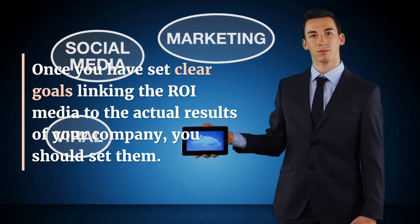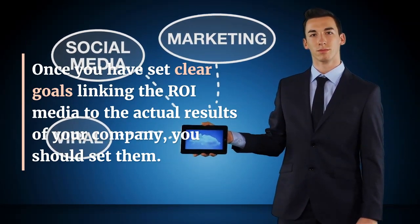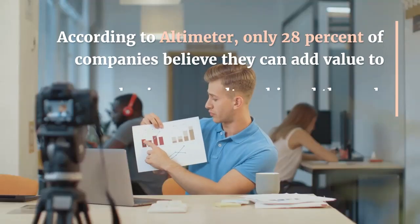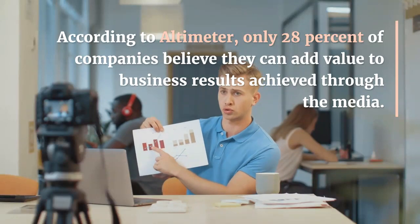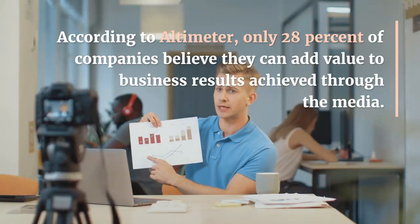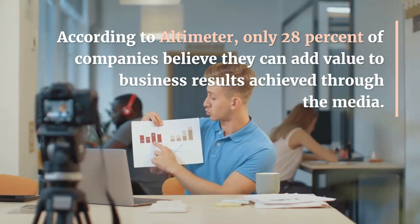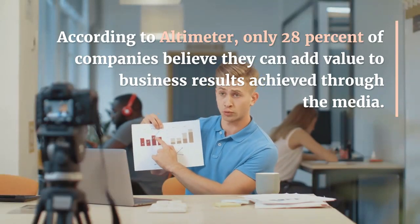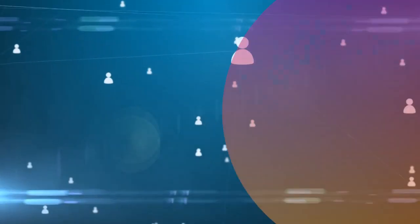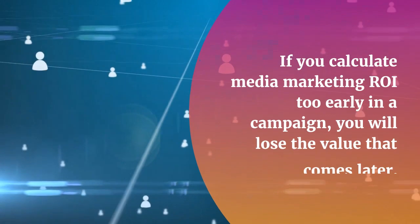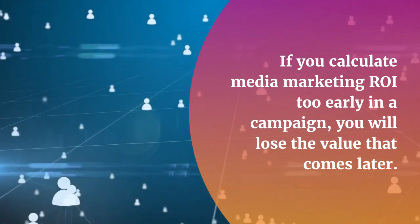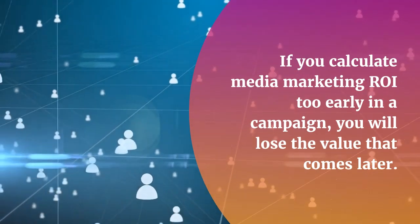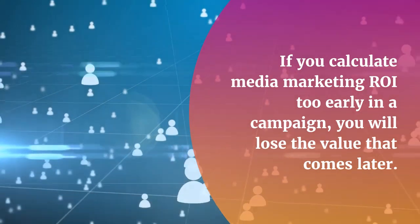Once you have set clear goals linking the ROI media to the actual results of your company, you should set them. Clear media goals can help you determine how social actions relate to company and department goals. When you report your return on your media investment, you clearly indicate what is being studied and how these lessons affect value and income. You must follow the media's metrics to determine if you are achieving your goals.